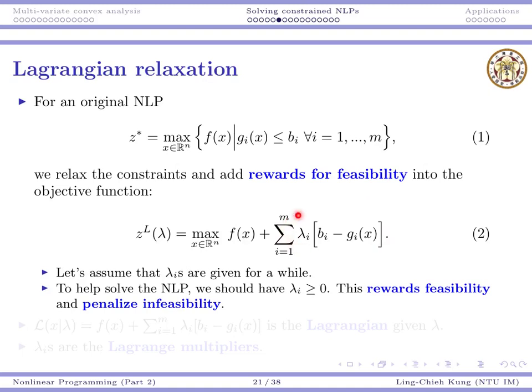For an original nonlinear program, like this, these are constraints. We call them hard constraints because they must be satisfied. We will relax these constraints and then add rewards for feasibility into the objective function like this. The new nonlinear program we consider is here. These constraints somehow become soft constraints. They may be violated. But we reward a point if the point satisfies the constraint. Certainly, you have a question. How do we decide the value of lambda? Let's assume they are given for a while. In general, there is a way to determine them.